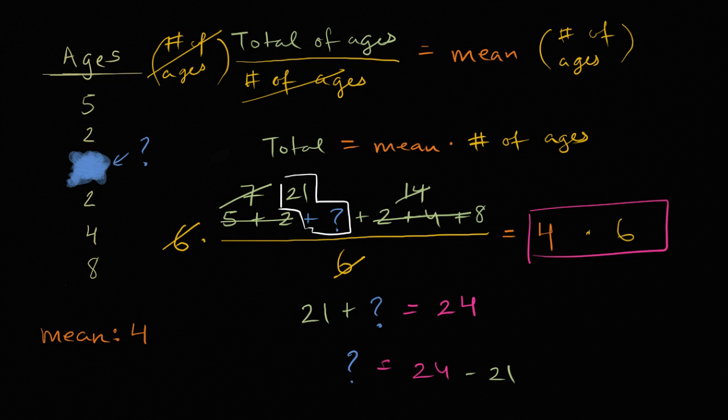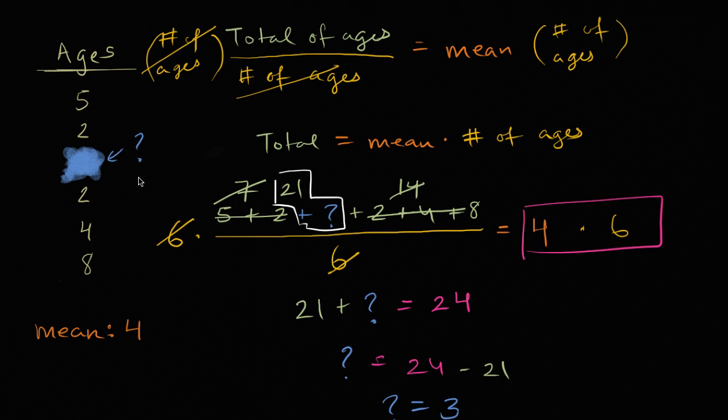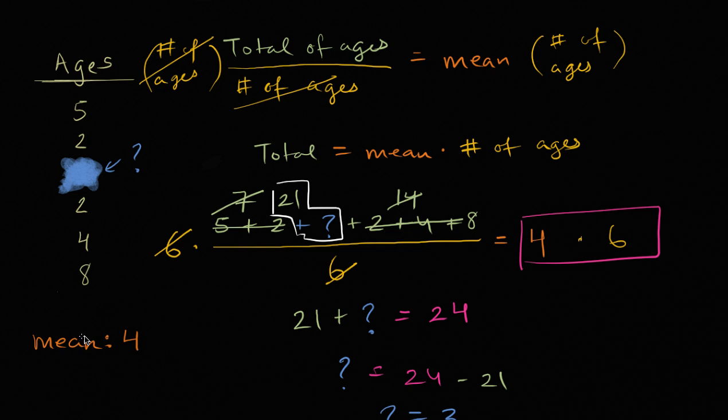Which of course, so let me just write this down. So the question mark is equal to three. So the missing age, you were able to figure it out based on the information you had, because you had the mean, you were able to figure out that behind this blotch you had a three. It's exciting.